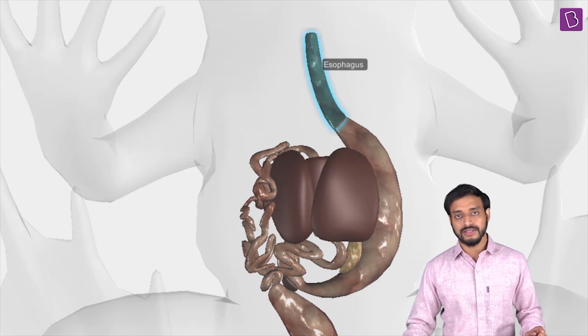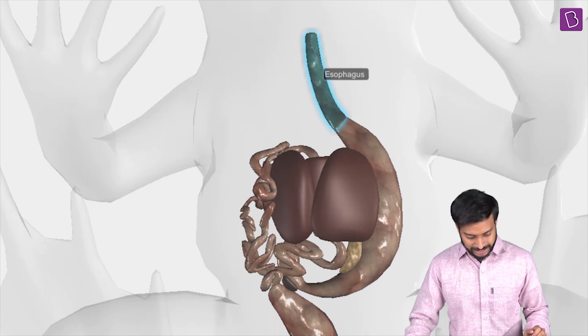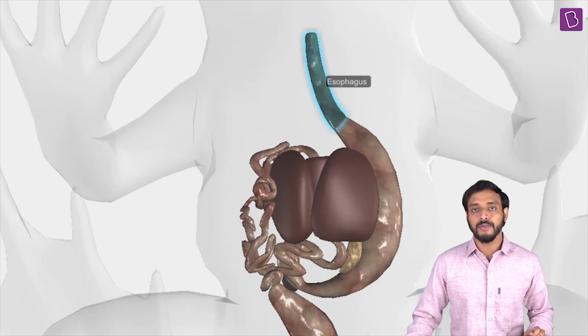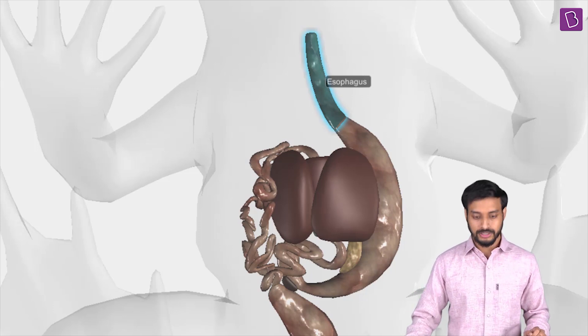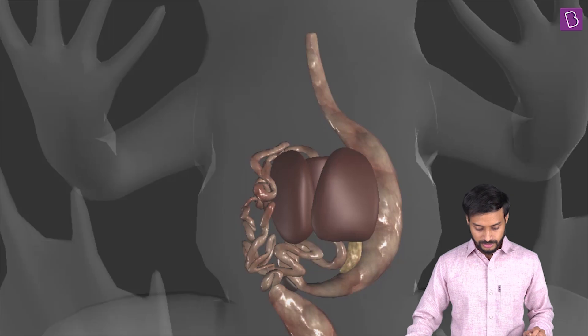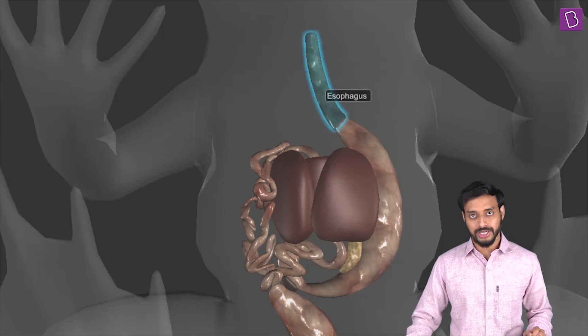So the esophagus — the mouth, the buccal cavity, the pharynx — and now here is the esophagus. From the esophagus, it will lead to what? Can you see the structure? It will lead to which part — can you tell me?